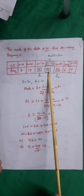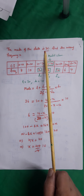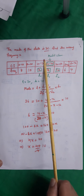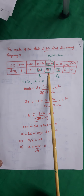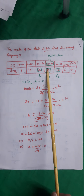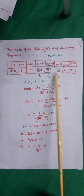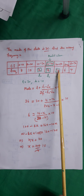The modal class is found by seeing where the mode lies. This mode lies in the 30 to 40 interval, so 30 to 40 is the modal class. F1 is the frequency of the modal class, which is 16. F0 is the frequency of the preceding class, so X is F0. F2 is the frequency of the succeeding class, so F2 equals 12.